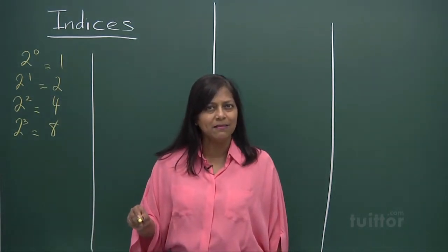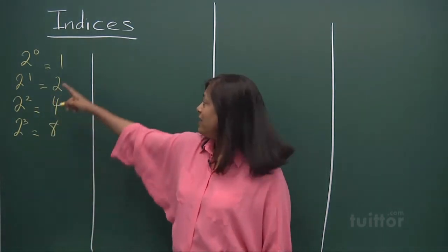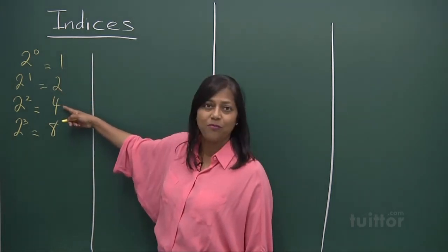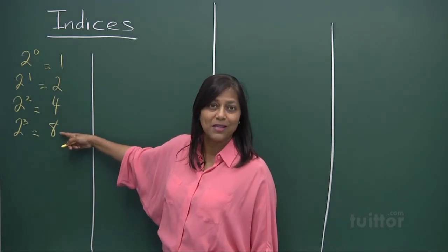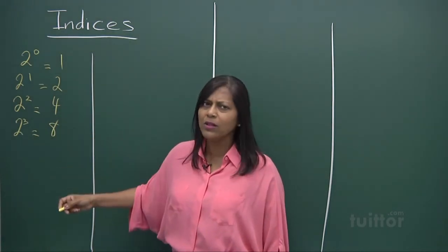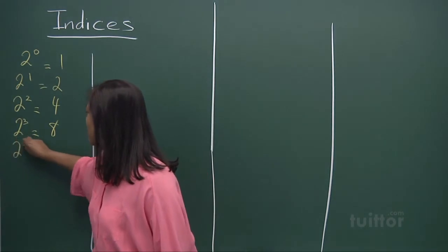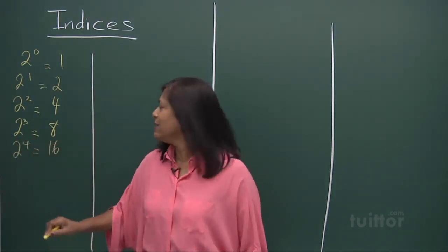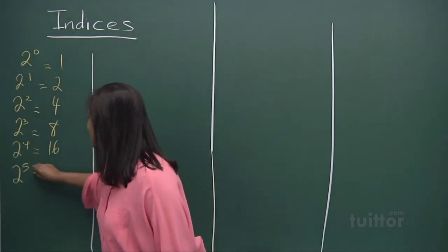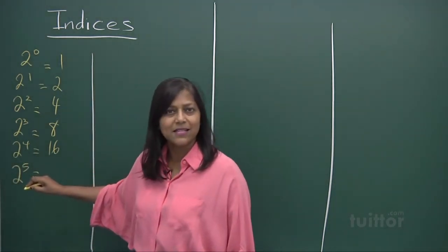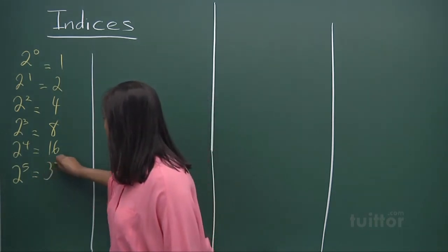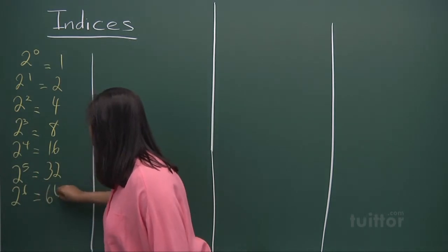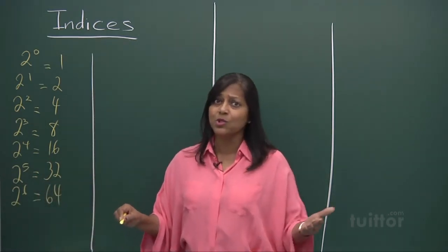Do you see a pattern? You do. You look at that. 1 times 2 is 2. 2 times 2 is 4. 4 times 2 is 8. So what will the next number be? If it's 2 to the power of 4, you get a 16. 2 to the power of 5, what do you get? Yes, 16 times 2 is 32. And 2 to the power of 6, you get a 64.